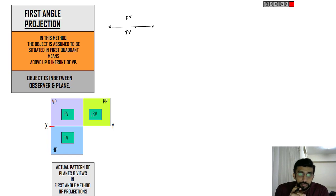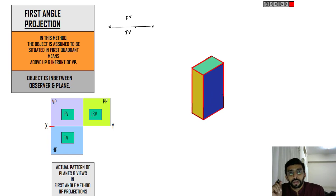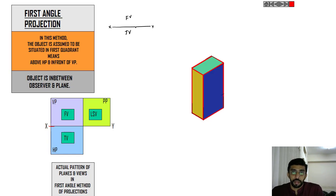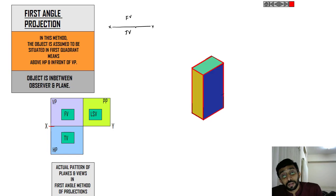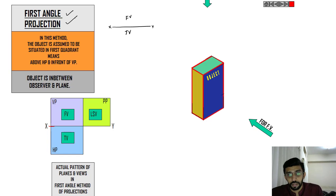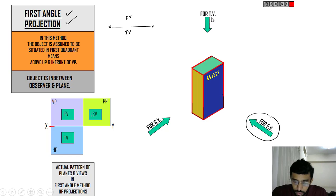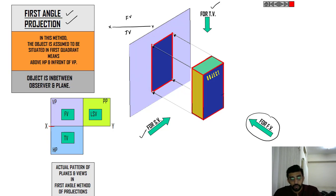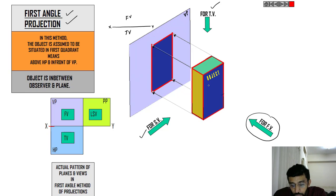Now let's see how we can draw something in the first angle projection. You have a solid like this — a prism, a rectangular prism — with different faces painted in different colors. This object has to be in the first quadrant. We are going to observe the object from three directions: front, top, and side. This vertical plane is your VP, and when you look from the front, what you can observe is the blue face.